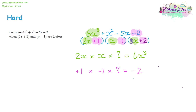The logic we used is that the first term of each bracket multiplied together gives the leading term, and the constant terms of each bracket multiplied together give the final constant. The middle terms are a mix, so we don't need to examine those closely for this method.